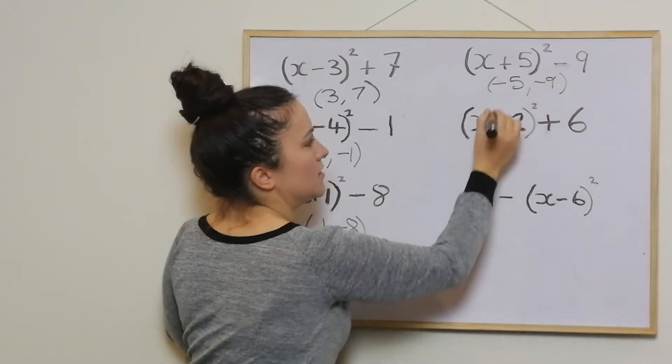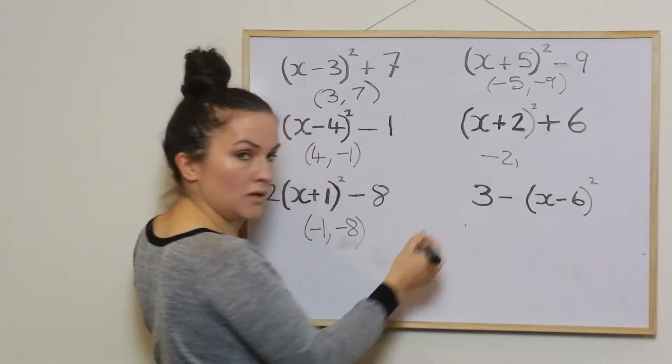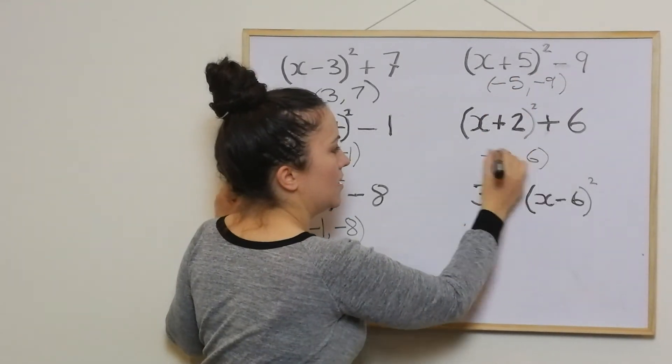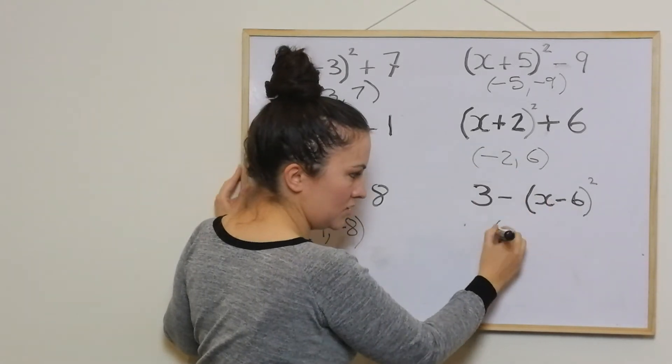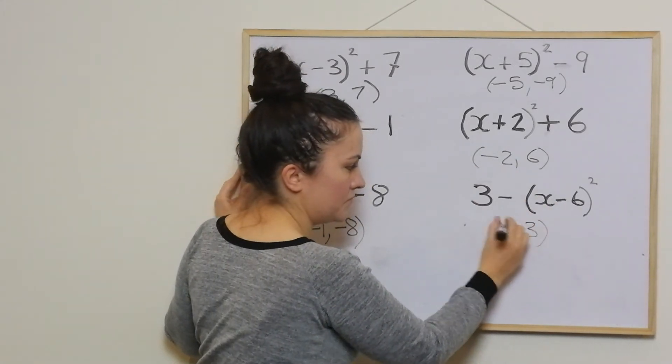This one negative 2 positive 6, and this one positive 6 and 3. There you go.